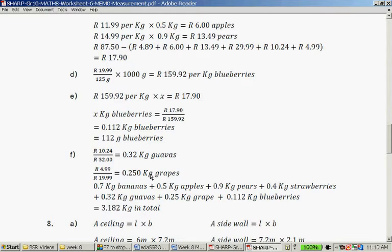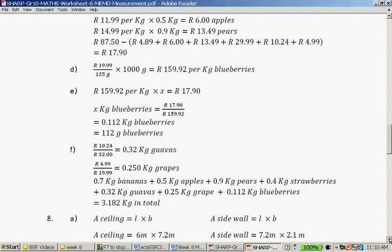So the guavas weighed 0.32 kilograms, 320 grams. The apples, 0.250, 0.7 grams of bananas, 0.5 kilograms of apples, 0.9 of pears, 0.4 of strawberries, 0.32 of guavas, 0.25 of grapes, and 0.112 kilograms of blueberries. So in total, it weighs 3.182 kilograms in total. That's a wonderful fruity feast.